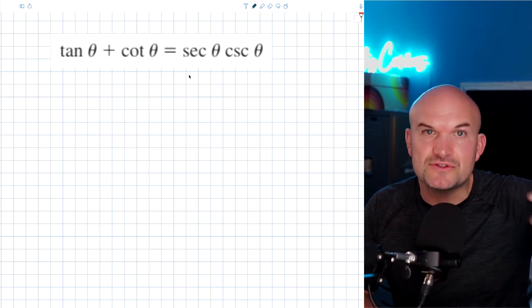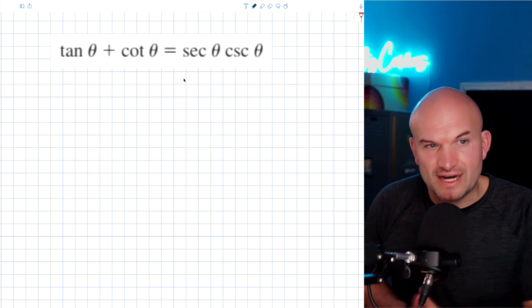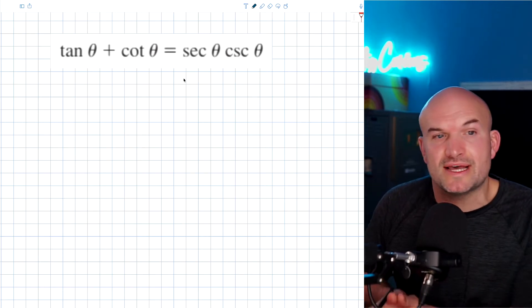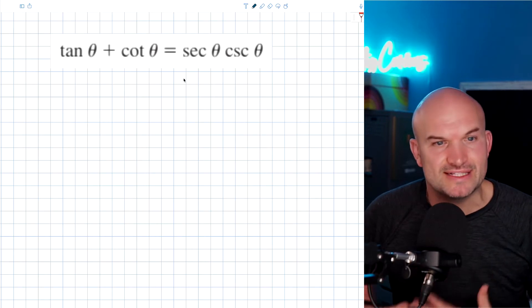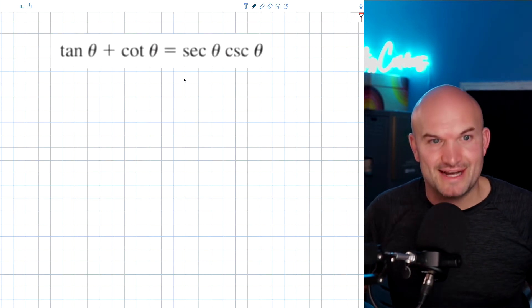when you're first learning how to verify identities, one of the biggest pieces of advice or first tip that we always do is pick the side that is the most complicated. Because when you're trying to verify an identity, you're trying to make the left side look like the right side.